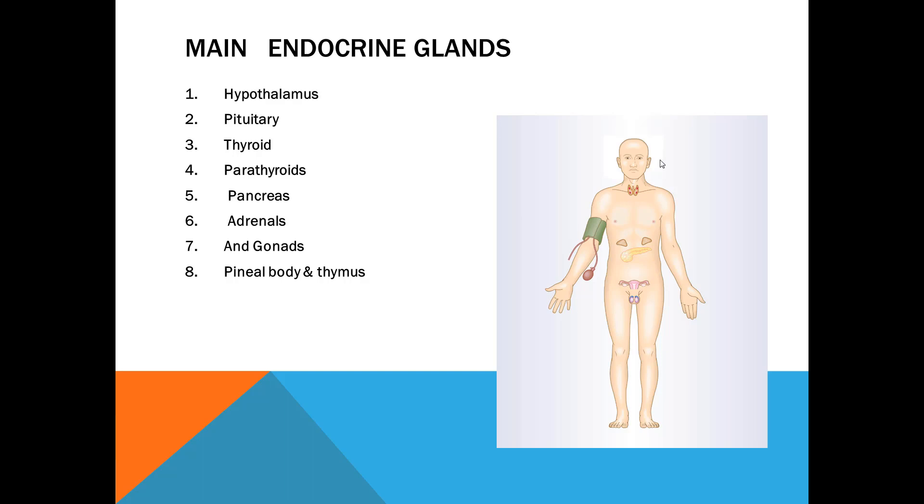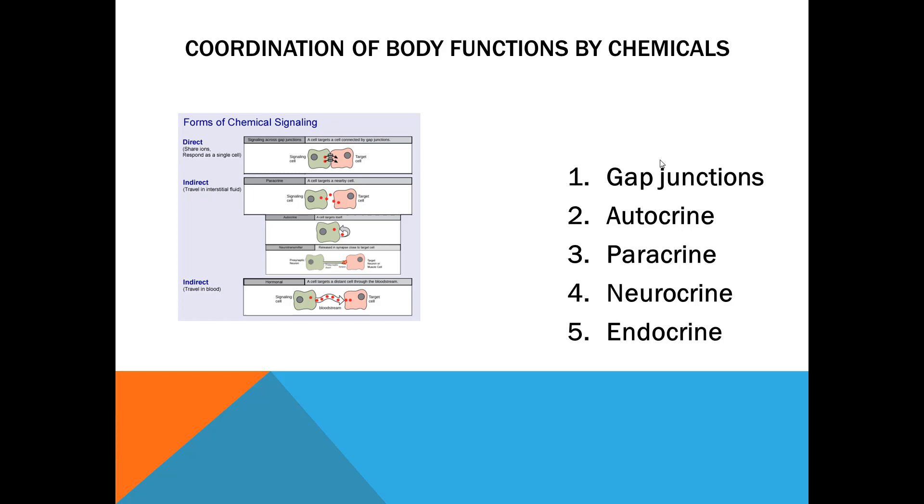This is a list of endocrine glands: hypothalamus, pituitary, thyroid, parathyroids, pancreas, adrenals, gonads—ovaries in females and testes in males. Additionally, pineal body and thymus have very important roles in the body.